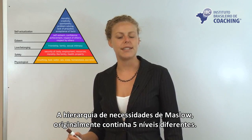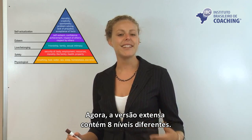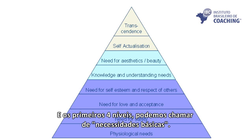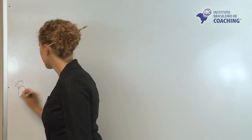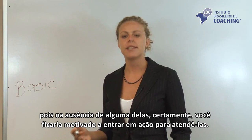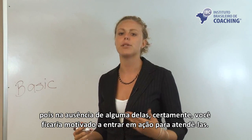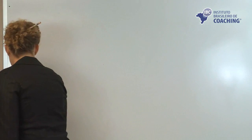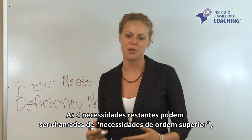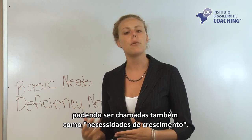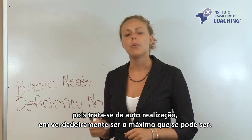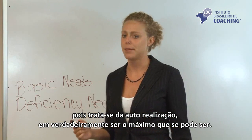Maslow's original hierarchy of needs contained five different levels, and the extended version has eight different levels. The first four we could call the basic needs. Maslow also referred to these as the deficiency needs, because if you were ever in deficiency on any of these needs, it would certainly motivate you into action. The four remaining needs could be called the higher order needs, or growth needs. Maslow referred to them as the being needs because they deal mostly with self-actualization and actually being the most that you can be.